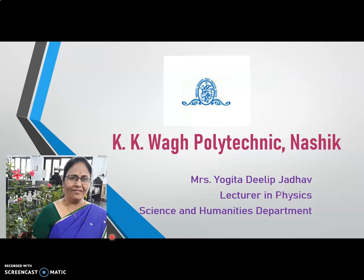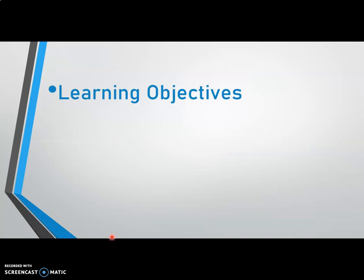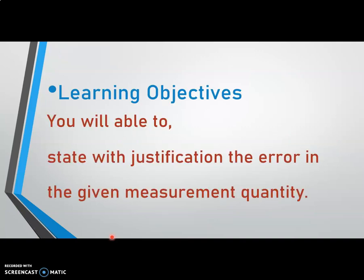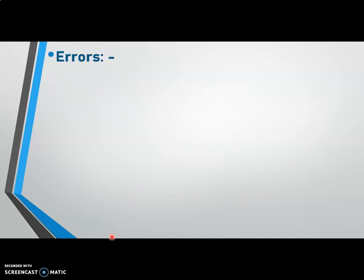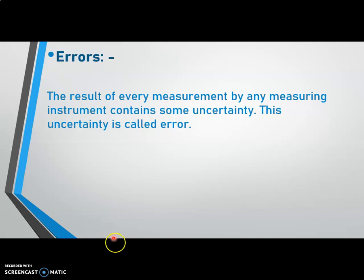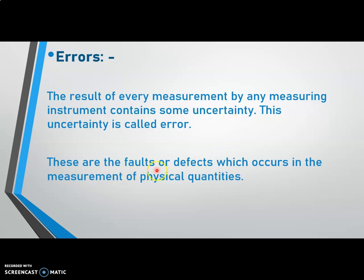In this video, we will discuss about different types of errors which occur in the measurement of physical quantity and how the errors are minimized. After watching this video, you will be able to state with justification the errors in the given measurement quantity. First, let us see what we mean by errors. If we measure any physical quantity, the result of every measurement by any measuring instrument contains some uncertainty. This uncertainty is called as error.